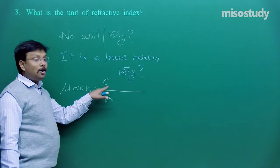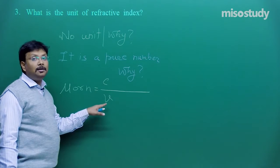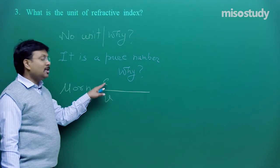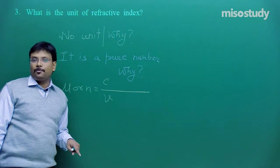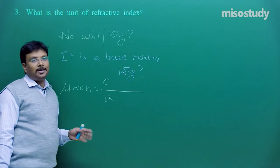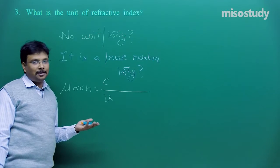Because refractive index mu or n is equal to C upon V. Speed of light in vacuum divided by speed of light in any medium. C is always greater than V. So mu is always greater than unity. Mu is one for vacuum or free space or air. Otherwise, it is 1.5, 1.3, 1.8, 2.4, 2.6 like that.